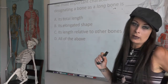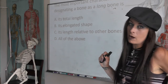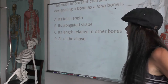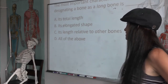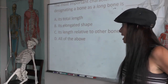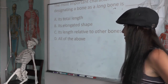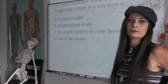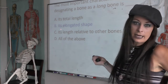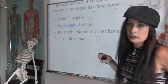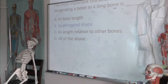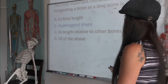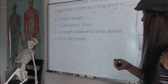I have a couple quick questions, and then we'll talk about some skeleton we haven't already discussed. The most important characteristic for designating a bone as a long bone is: A, its total length; B, its elongated shape; C, its length relative to other bones; D, all of the above. The answer is its elongated shape. Total length doesn't matter because a lot of short bones are bigger than some of your little long bones and phalanges.